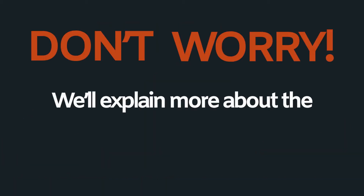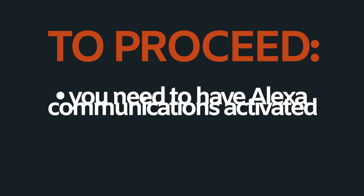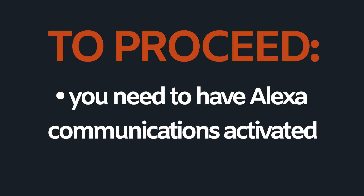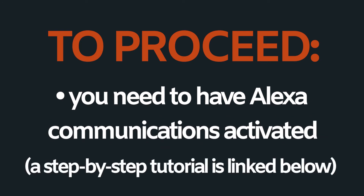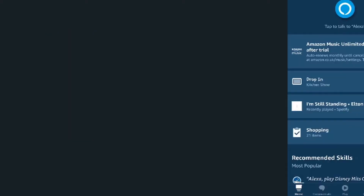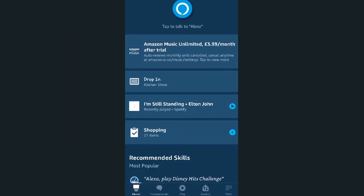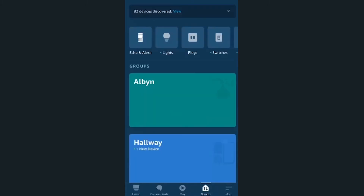First of all, you need to have Alexa Communications activated. If you don't, we have a tutorial video that will help you set that up, which will be linked in the description box below. Open the Alexa app and tap on Devices in the bottom right corner.